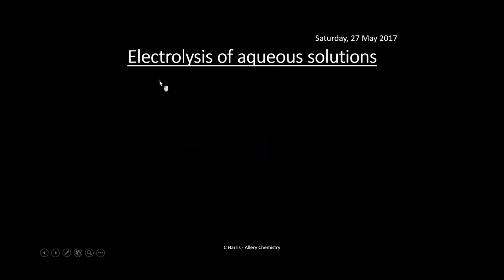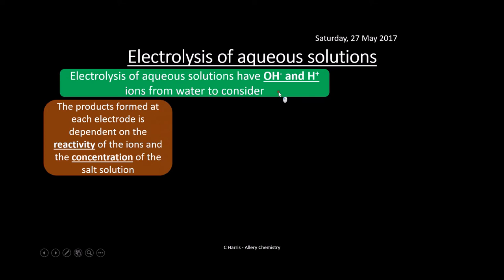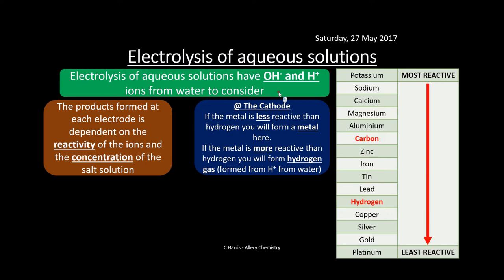It gets more complex with aqueous solutions because we now have extra ions to contend with — OH⁻ and H⁺ ions from the water. The products formed at each electrode depend on two things: the reactivity of the ions and the concentration of the salt solution. At the cathode, if the metal is less reactive than hydrogen you will form a metal; if the metal is more reactive than hydrogen, hydrogen gas is formed from H⁺ ions.